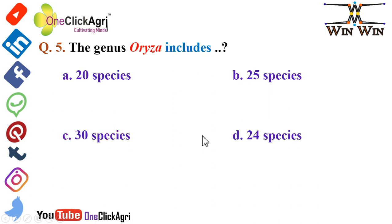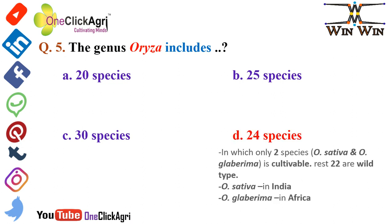The next question: the genus Oryza includes 24 species, of which only two species are cultivable — Oryza sativa and Oryza glaberrima. The rest of the 22 are wild type species. In India, Oryza sativa is cultivated, and in Africa, Oryza glaberrima is cultivated — please remember these two things.